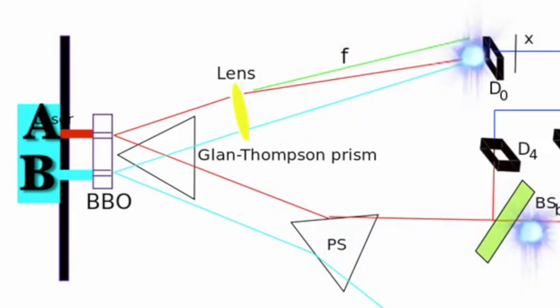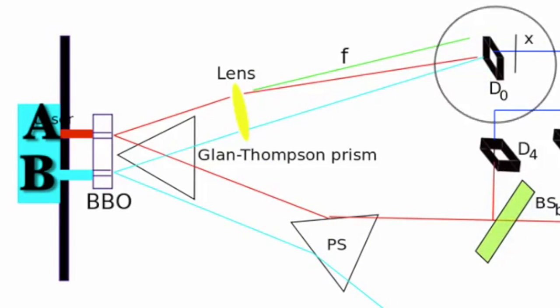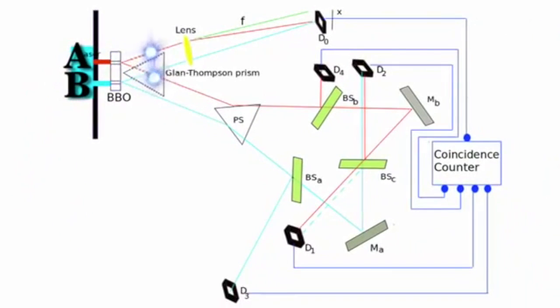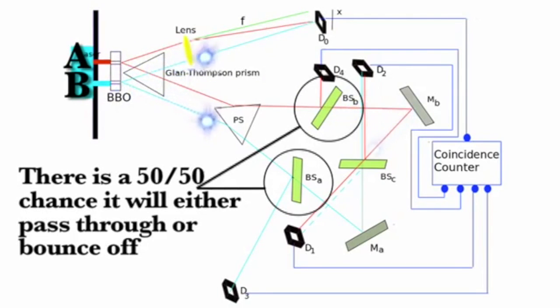But the other entangled photon goes the other way, and because it is entangled, it will affect the result of its twin that went to D zero. Now the other photon from either A or B goes through the prism and hits either BSA or BSB. At both of these, there is a 50-50 chance it will either pass through or bounce off and go to either D four or D three.